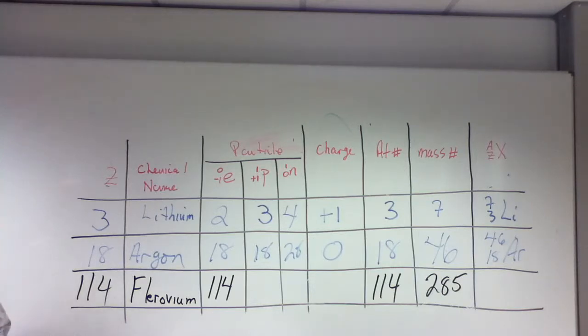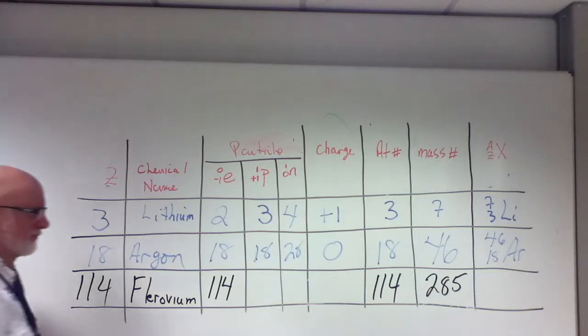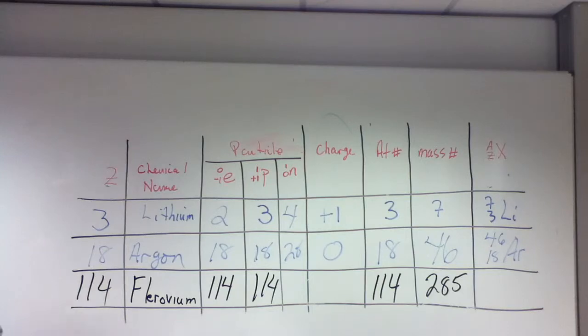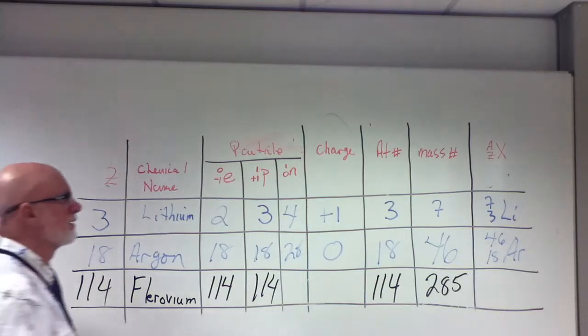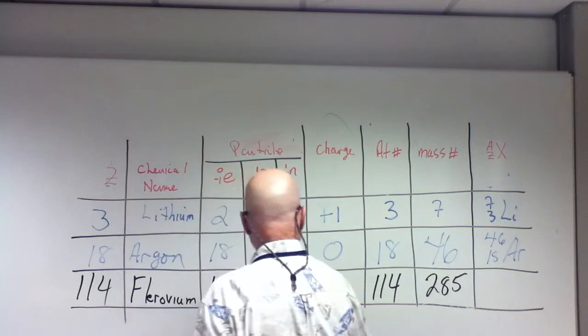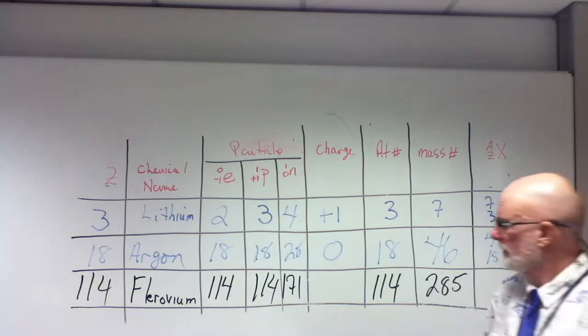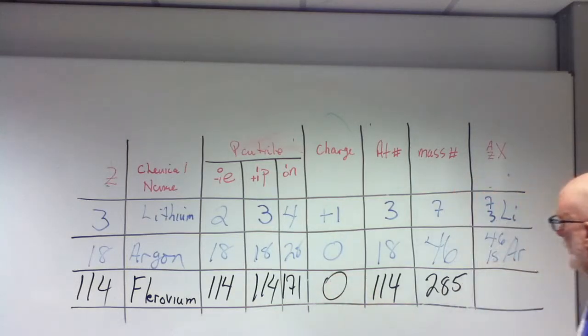Well, how many protons? 114, right? And neutrons? 171. What is it? 171. And what about the charge? Zero. And what about the notation? 285 over 114, Fl. Big atom.